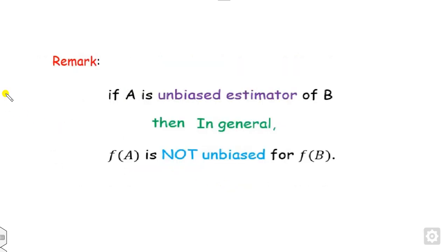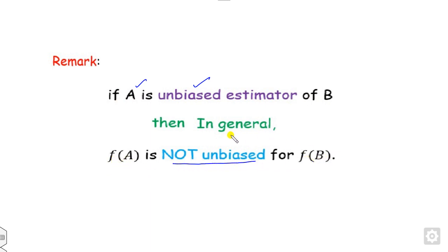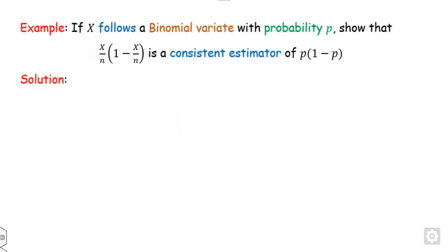One important remark: if an unbiased estimator exists, then f of that estimator is not necessarily an unbiased estimator of f(gamma) in general — it may or may not hold. But if there is a consistent estimator, then f of that estimator will always be a consistent estimator.